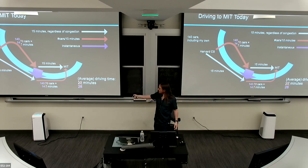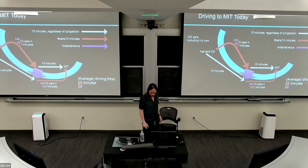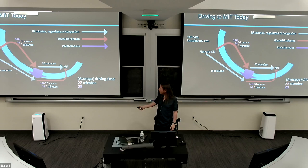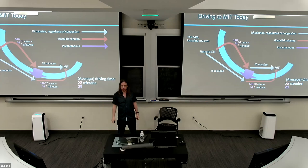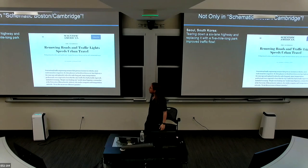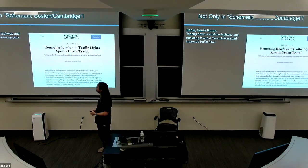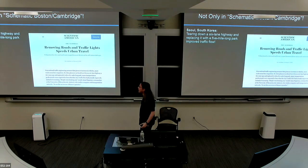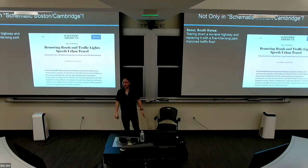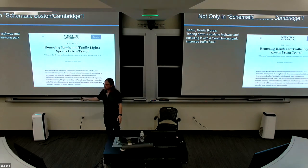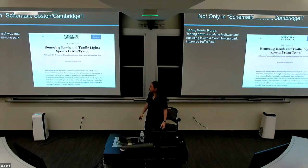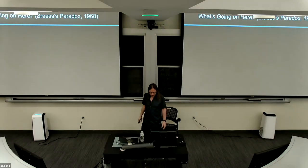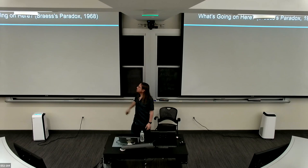This isn't just a story about schematic Cambridge-Boston — it actually happens in real life. The equivalent in reverse: destroying a road segment might actually help driving time. This happened in Seoul, South Korea, a couple of decades ago. They tore down a six-lane highway and replaced it with a five-mile-long park. This actually improved traffic flow, with a similar number of cars on the road every day but people got to where they wanted faster. This phenomenon is known as Braess's paradox, going back to the 1960s.